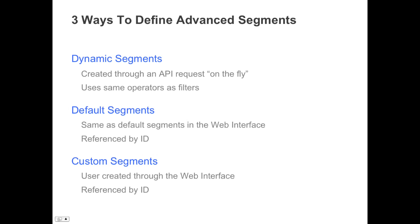The Google Analytics API has three new ways to define advanced segments through the API. The dynamic segment is very powerful and allows you to create a new advanced segment directly in the API query. The default segments are the same as the default segments in the Google Analytics web interface and can be referenced by ID. Custom segments can be created using the advanced segment builder in the web interface and also referenced by ID through the API.